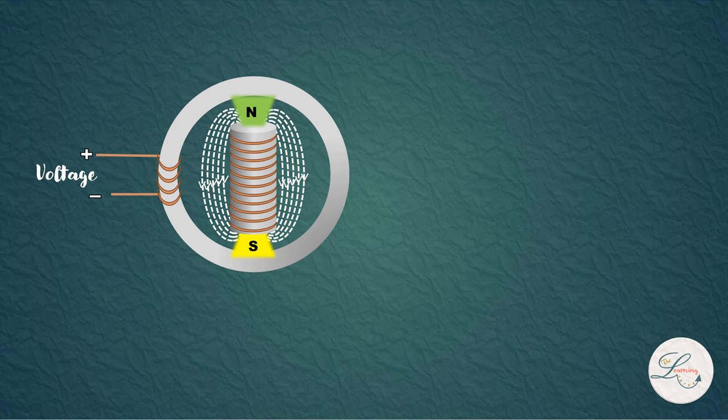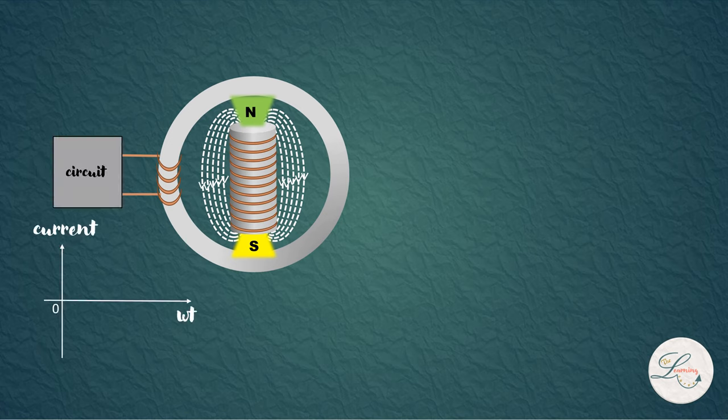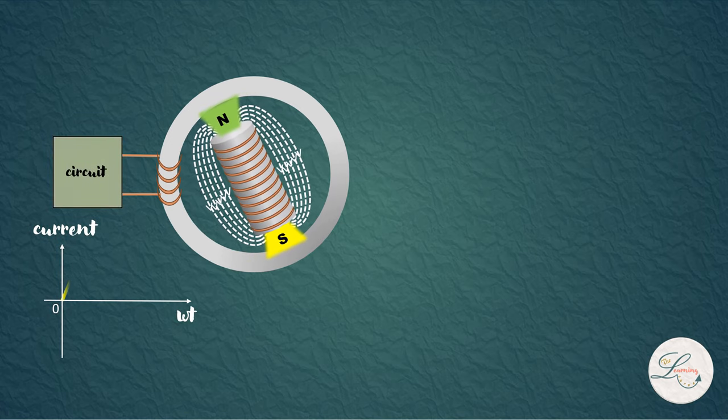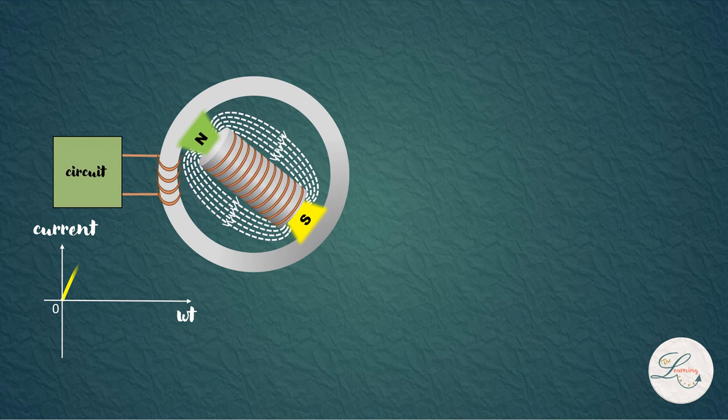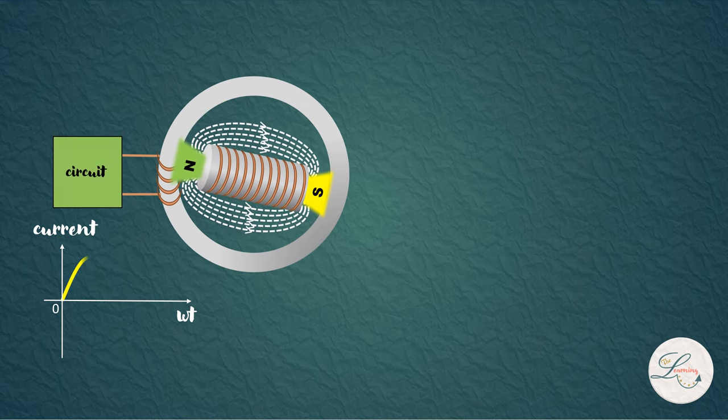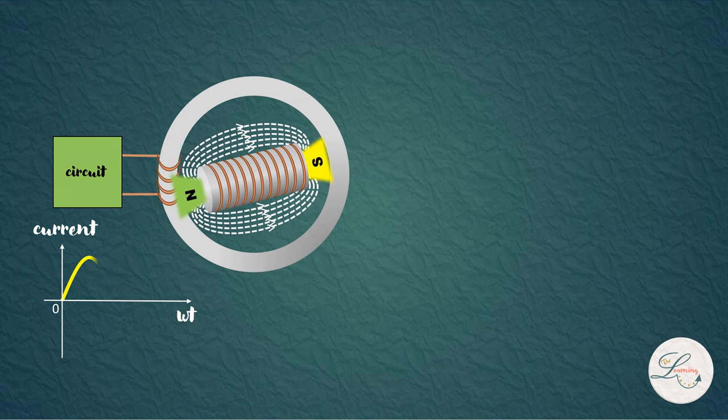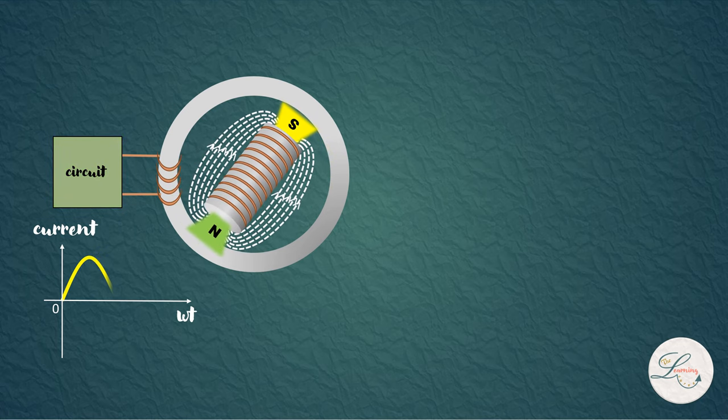When the electromagnet is vertical, the magnetic lines do not cross the conductor and so no current flows through the conductor. As the north pole approaches the conductor, the current flow increases and reaches its peak value. And as the north pole starts to move away, the current flow decreases and reaches zero.